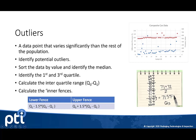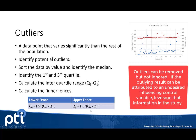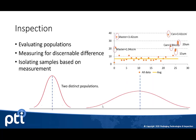You take that interquartile range and multiply it by 1.5. Then Q1 minus that value gives you the lower fence for setting an outlier boundary, and Q3 plus 1.5 times the interquartile range gives you the upper fence. Any numbers outside of those fences you don't want to include as part of your known good sample population — those are outliers. There's something different about those samples, so keep that in mind as you're setting up your sample set and population.